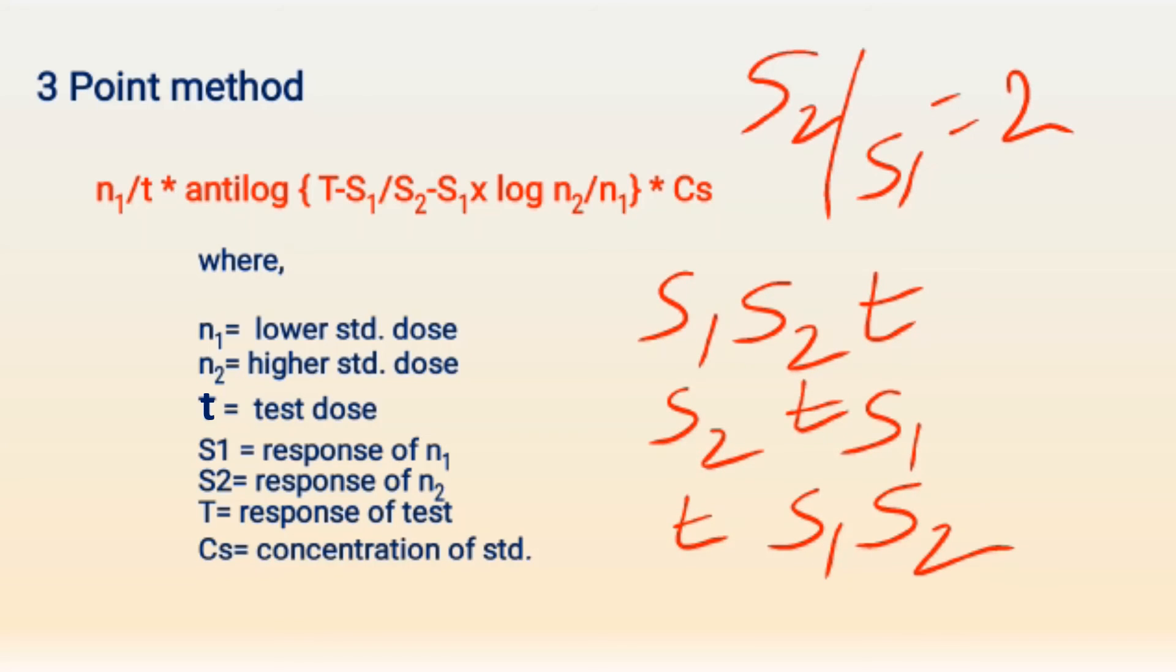Here the mean responses are calculated and plotted against the log dose. And the potency of the test is found using the formula that is N1 by T into antilog of T minus S1 divided by S2 minus S1 into log N2 by N1 whole into Cs. Where N1 is the lower standard dose, N2 is the higher standard dose, T is the test dose, S1 response of N1, S2 response of N2 and T the response of test and Cs is the concentration of the standard.